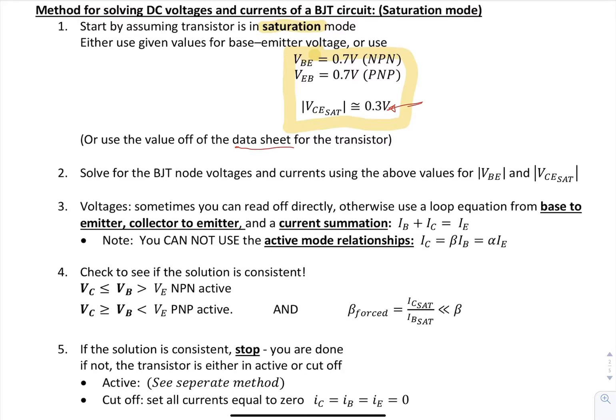You're going to use these values and then you're going to also use either the voltages that are already given in the circuit, or you're going to take loop equations from base to emitter, collector to emitter using that VCE value. And then you're going to do a current summation equation to get your last equation of IB plus IC equals IE for either PNP or NPN. Note that you cannot use the active mode relationships. These are no longer valid. So you cannot use that in your solution when you assume saturation.